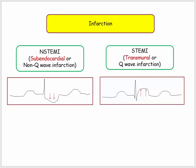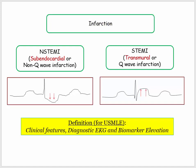Infarction for our purposes will include subendocardial and transmural MI, also referred to as non-ST or ST elevation MI. You will eventually need to be familiar with the EKG patterns of ST elevation MI, which I will cover in a separate video. They assume you can interpret EKG with ST elevation and then go on to ask derivatives. For USMLE purposes, infarction will have clinical features of angina, a diagnostic EKG, and/or biomarker elevation suggestive of myocardial necrosis.